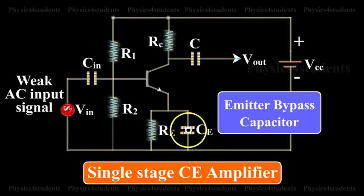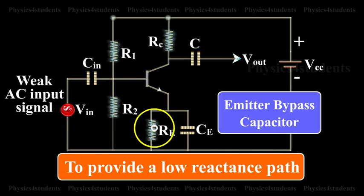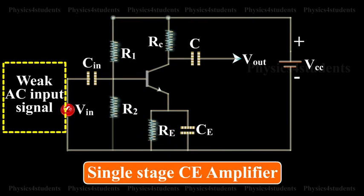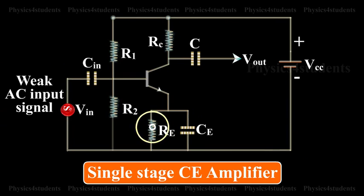Emitter Bypass Capacitor CE: This is connected in parallel with RE to provide a low resistance path to the amplified AC signal. If it is not used, then the amplified AC signal flowing through RE will cause a voltage drop across it, thereby shifting the output voltage.